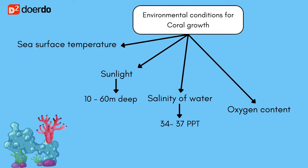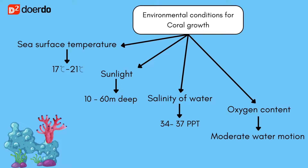The temperature of the sea surface water should not be lower than 17 degrees and must not exceed 21 degrees Celsius. The water motion must be moderate to ensure that the corals receive sufficient oxygen.